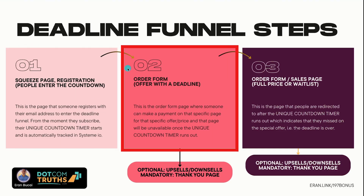Then you have the order form, which is the offer with a deadline. This is the order form page where someone can make a payment for that specific offer price. It is available during that timeframe, meaning it will be unavailable once that unique countdown timer runs out. You may also want to have upsells and downsells, or a webinar somewhere in between — all that's optional. But the actual payment aspect has a deadline.